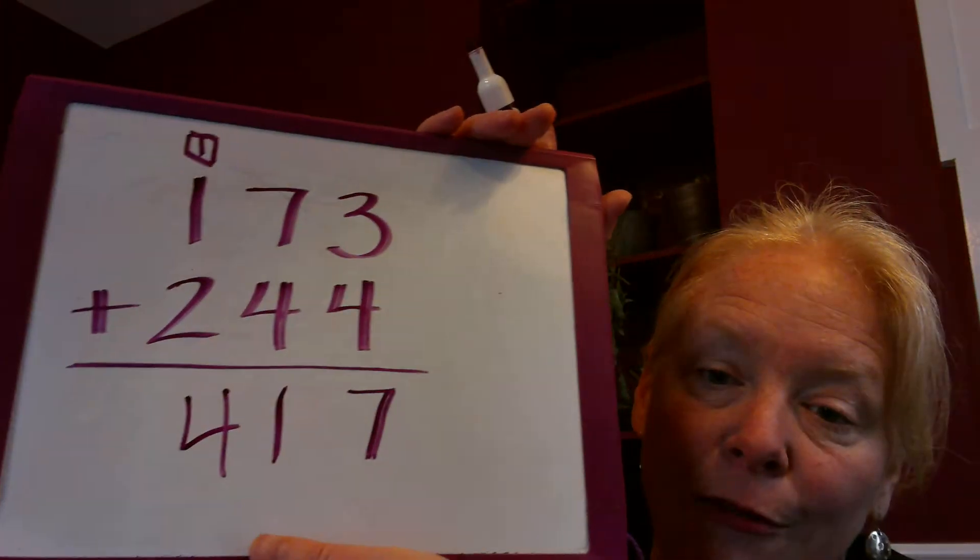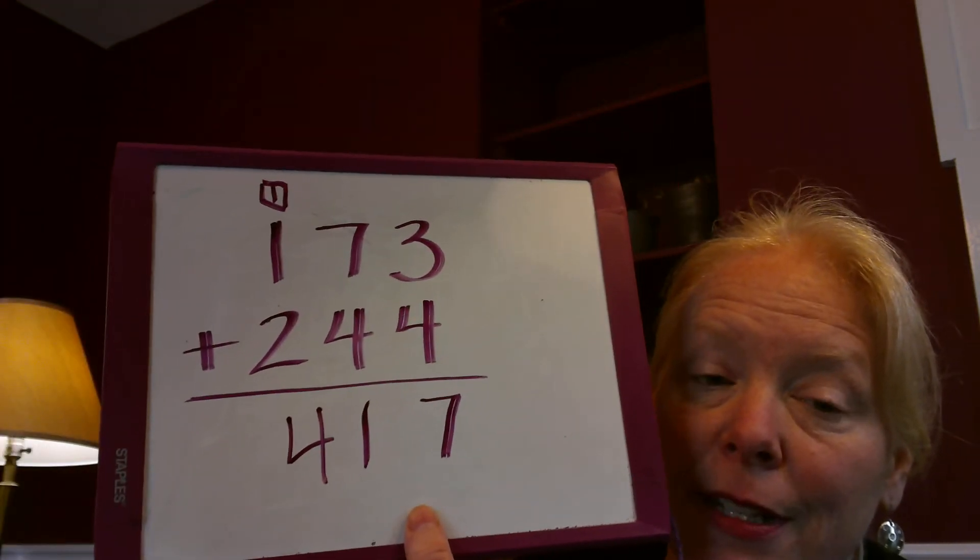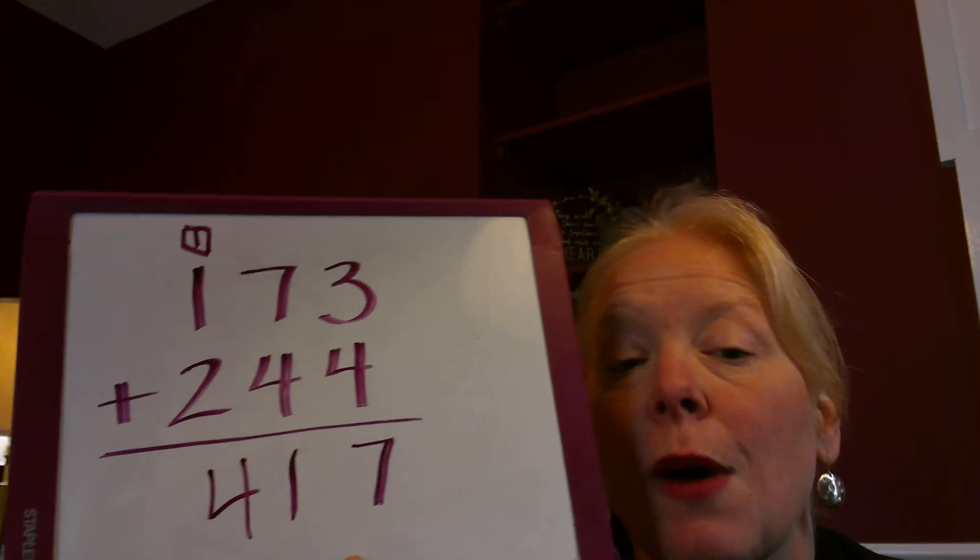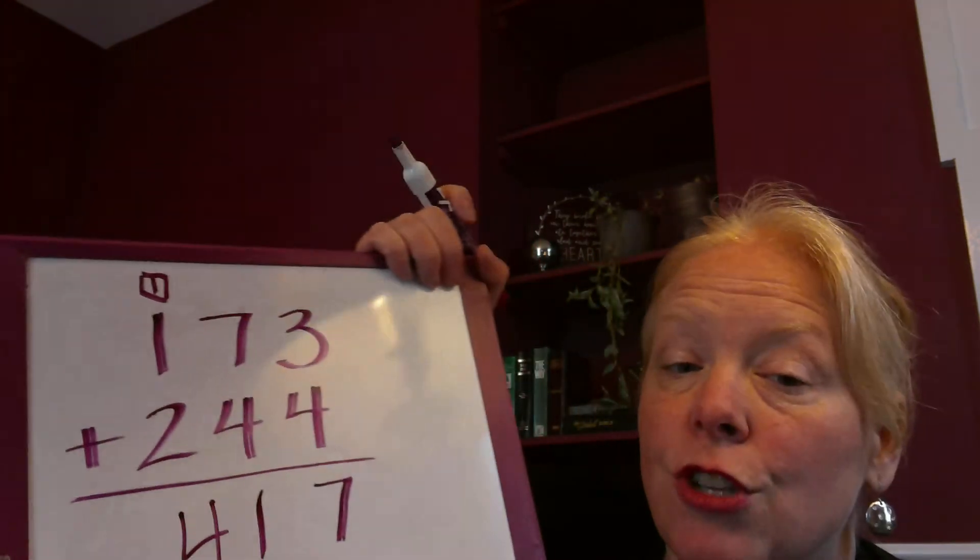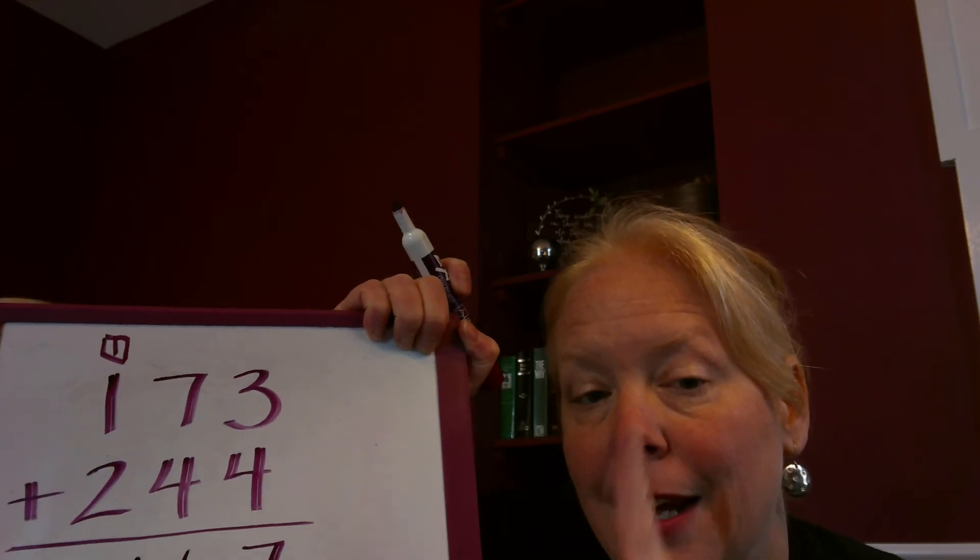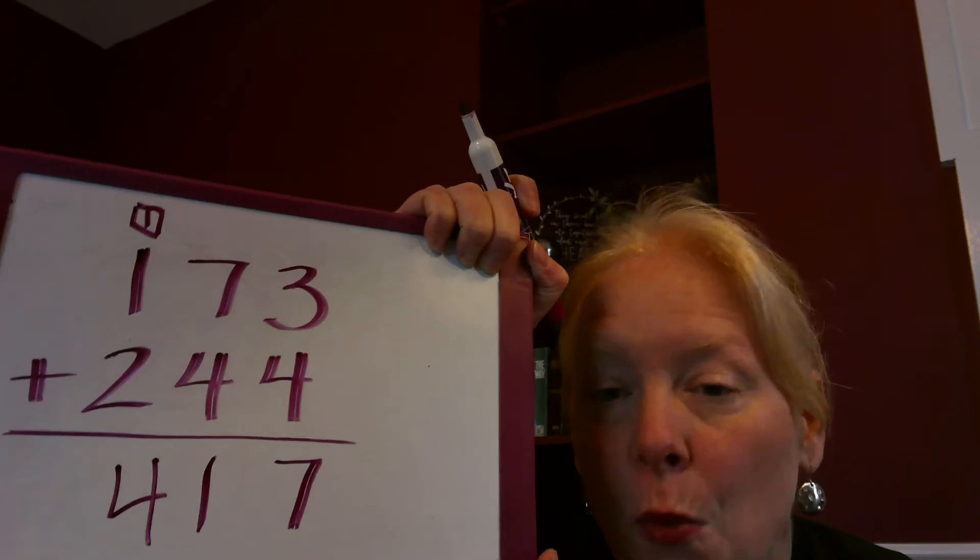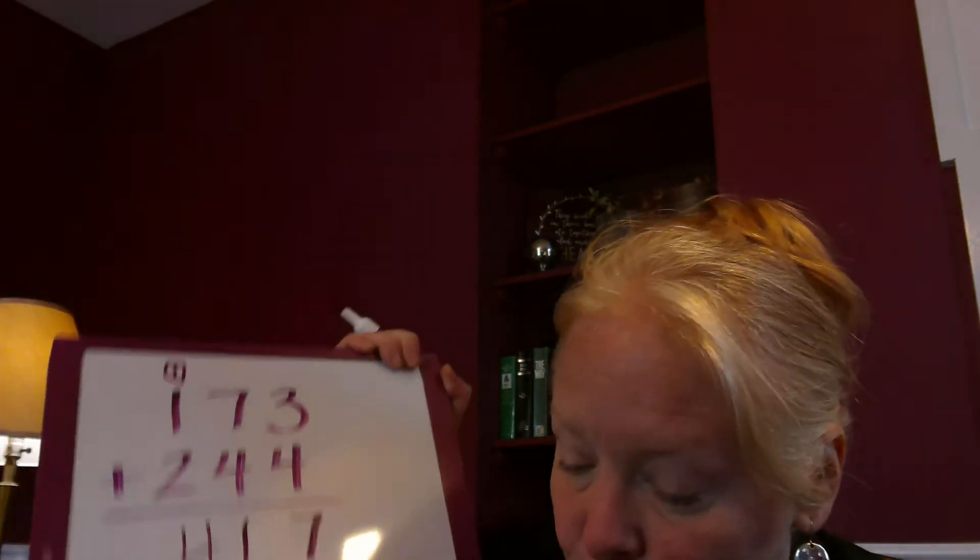If you are still in the visual representation phase of this and you want to be able to use those shapes that I showed you before—the big square for the hundred, the stick for the ten, and the one little cube or one little cheerio for the ones—you can do the visual in the boxes underneath.